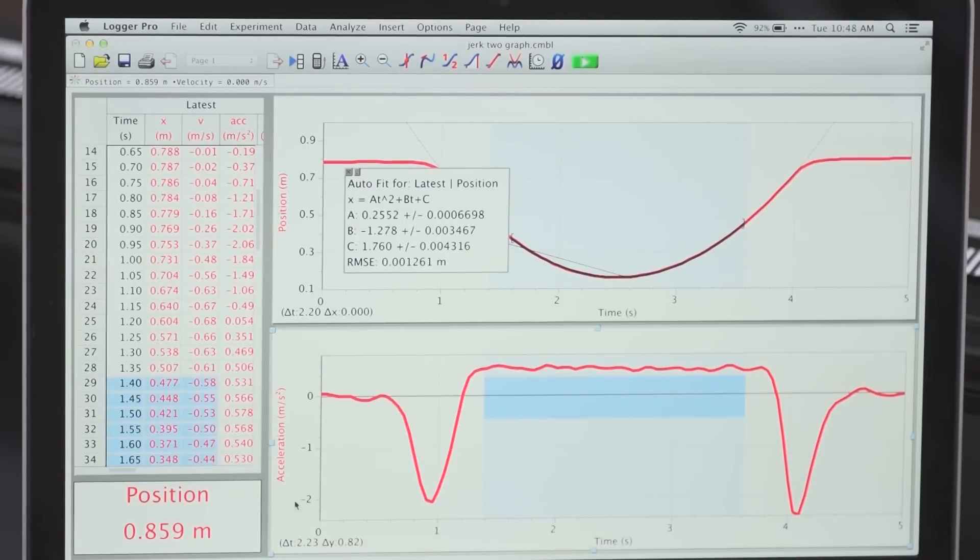I can actually go one step beyond the acceleration graph, which is the second derivative of position. Let's take a look at the graph of jerk as a function of time. Jerk is the third derivative of position. Such a graph is essentially never used with a motion detector because they're too noisy. But let me draw that graph and see what it looks like.